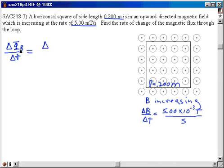Now phi sub B, the magnetic flux, is the area of the shape through which we're trying to find the magnetic flux times the magnetic field. So we're trying to find the rate of change of AB, delta AB over delta T, where the A is a constant.